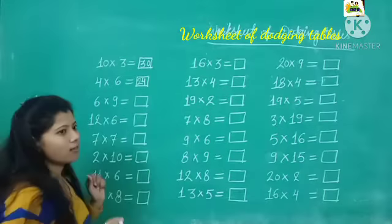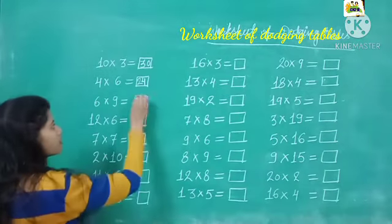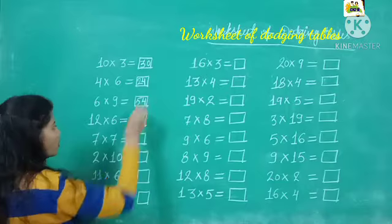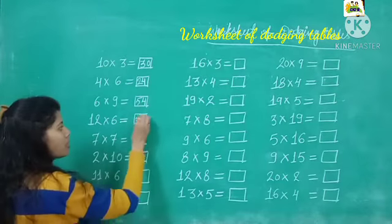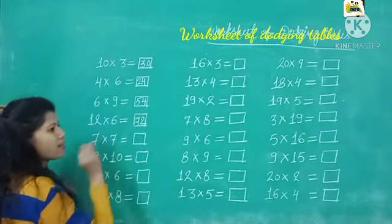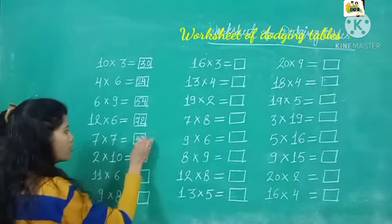6 threes are. Kya likha pe aap hai? 6 threes are 18. 12 sixes are. What is 12 sixes are? 72. 7 sevens are. Kya likha hai? 49. Very good.